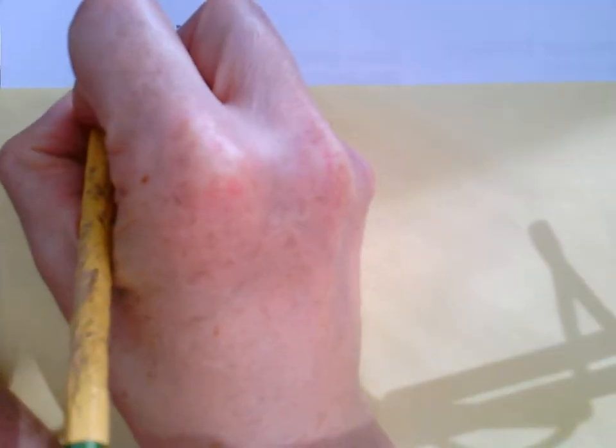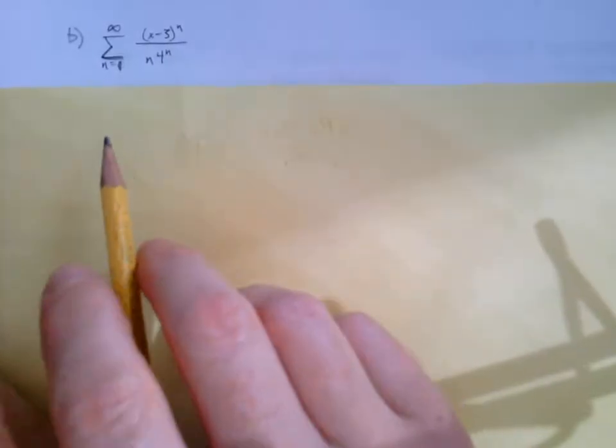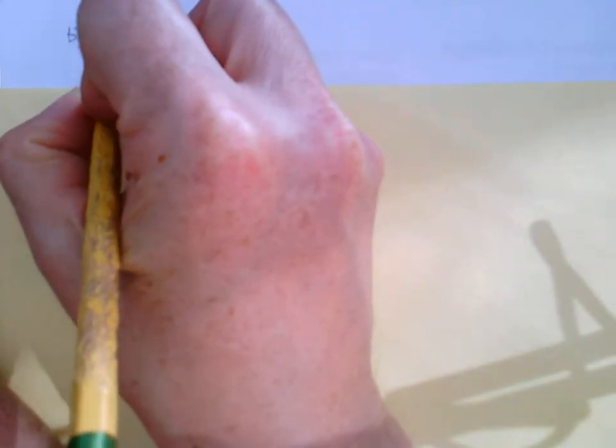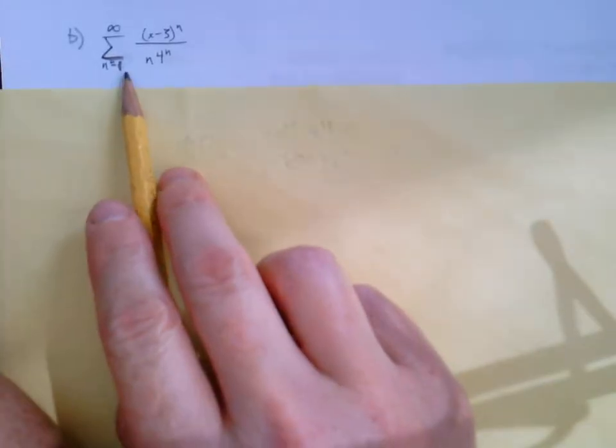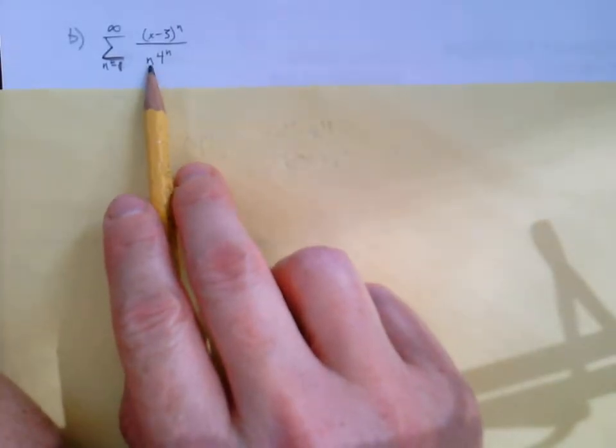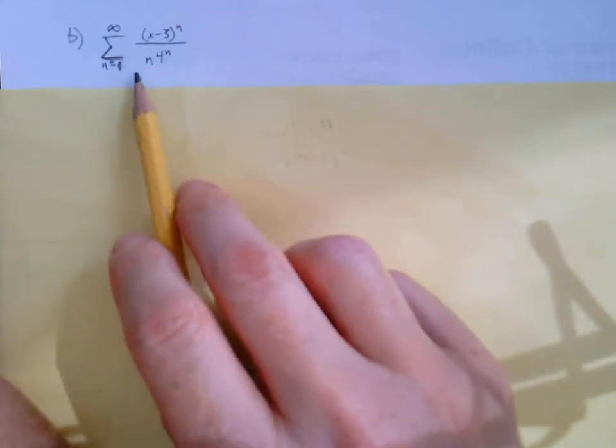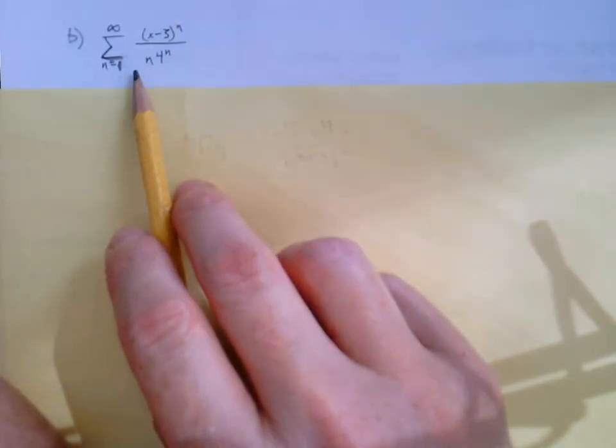So let's see what happens here. I said in the last video that power series start at 0, but here we have one starting at 1. We need to do that here because we're dividing by n, and we don't want to start at 0 or else we'd be undefined. So we'll start at n equals 1.